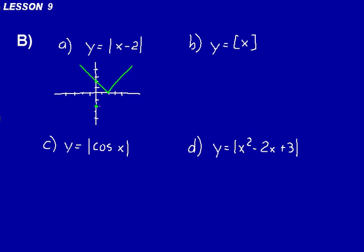Unless you had a negative sign in front of the absolute value symbol. If this was y equals minus the absolute value of x minus 2, that would always be negative. Now let's look at problem B — it's not an absolute value function. That's called the greatest integer function. It's got braces there, not just bars on the sides like absolute value.